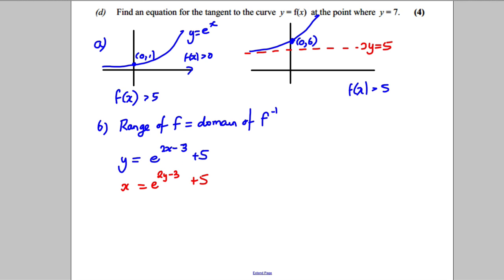Now I'm going to make y the subject. So I'm going to subtract 5 off both sides. I'm going to take natural logarithms of both sides. And I'm going to make y the subject here, adding 3 and dividing by 2.